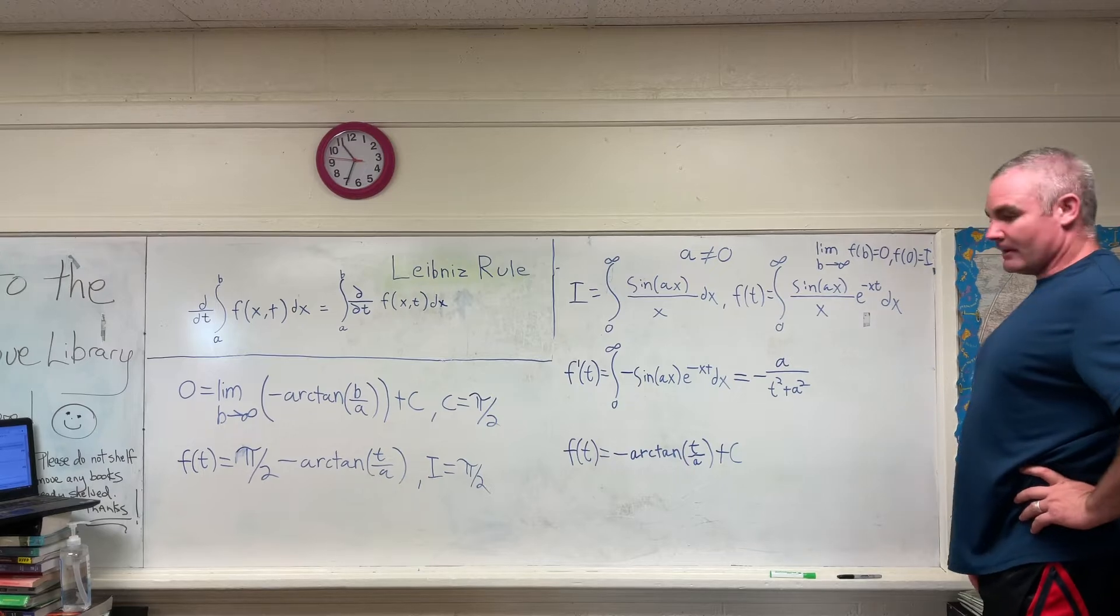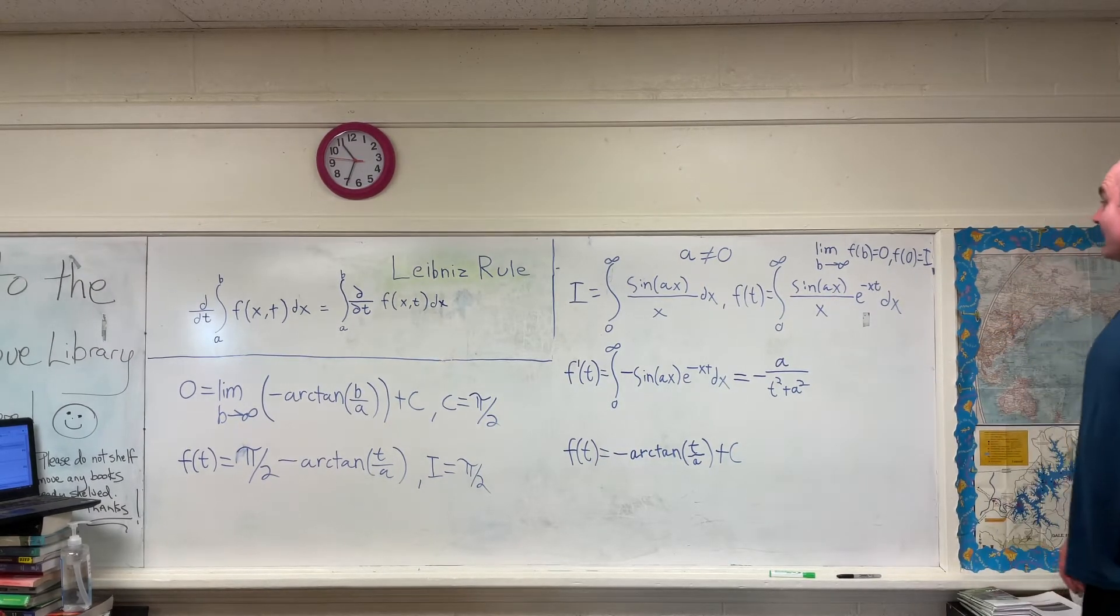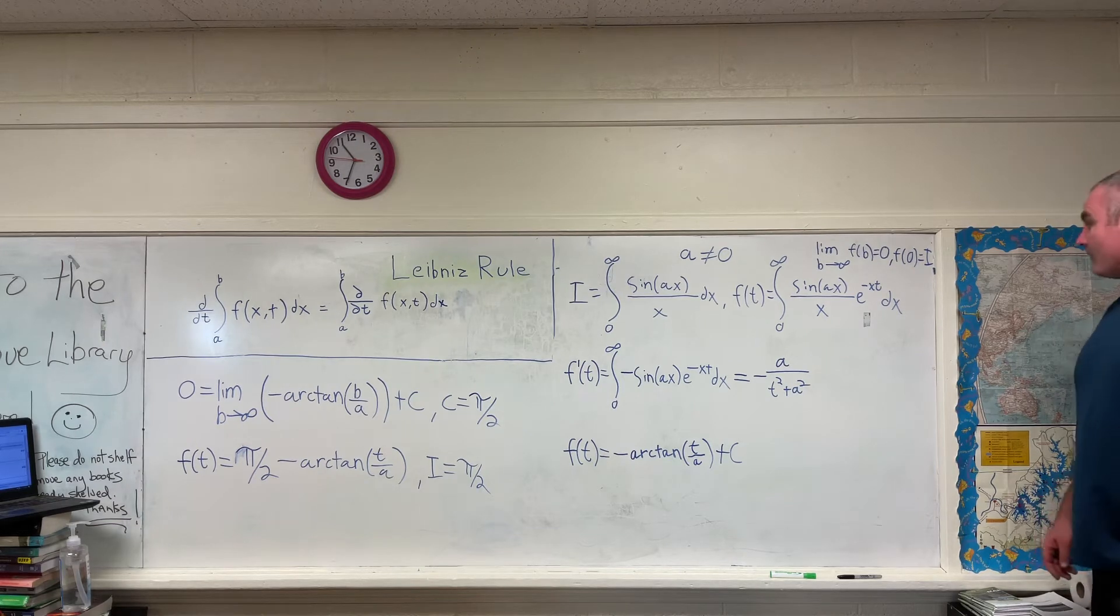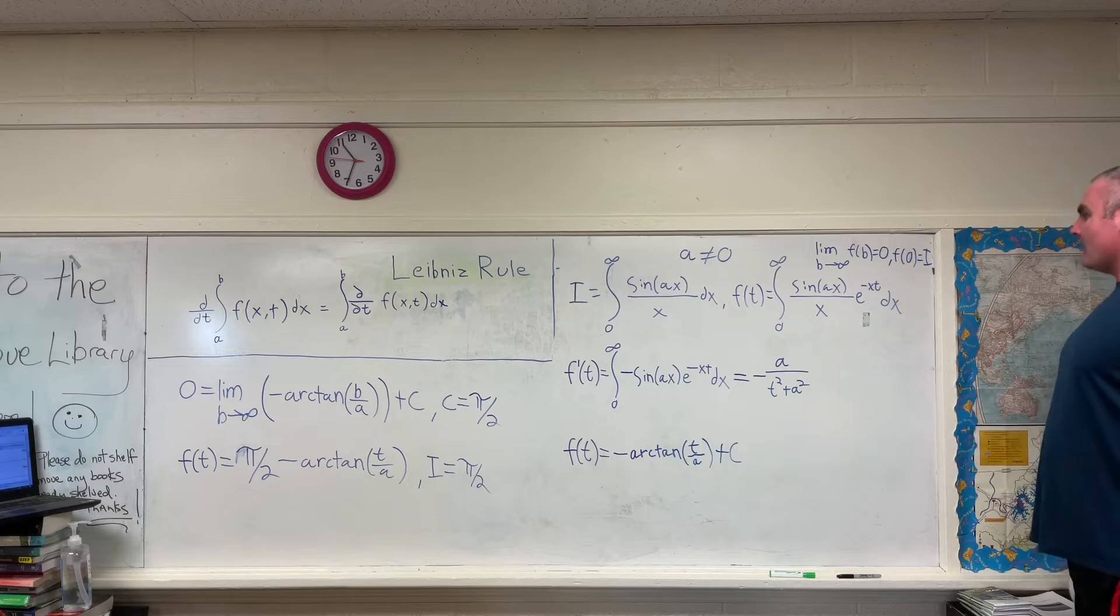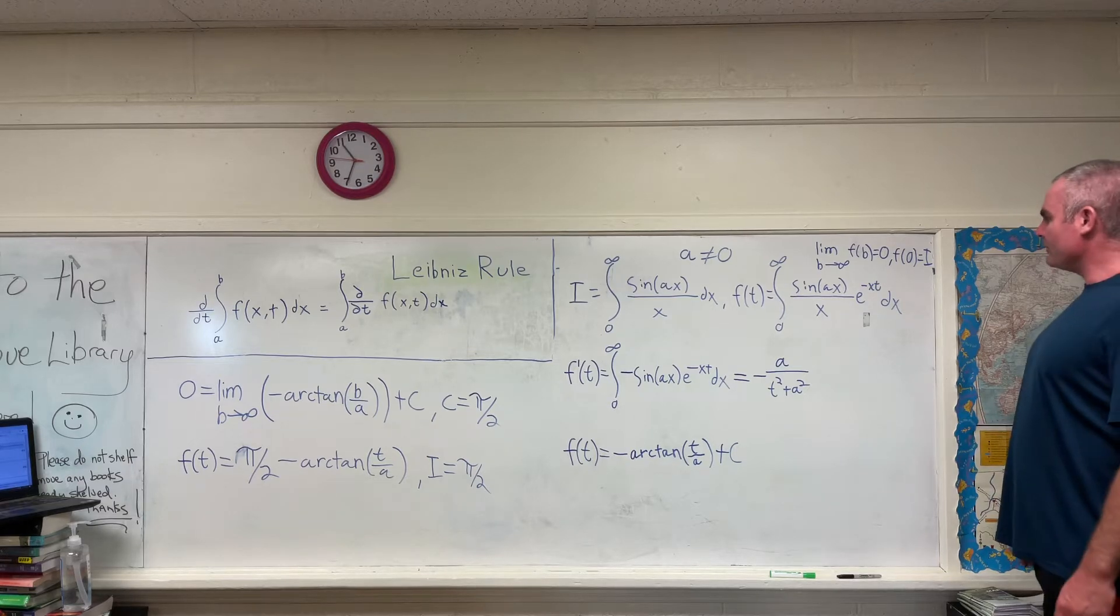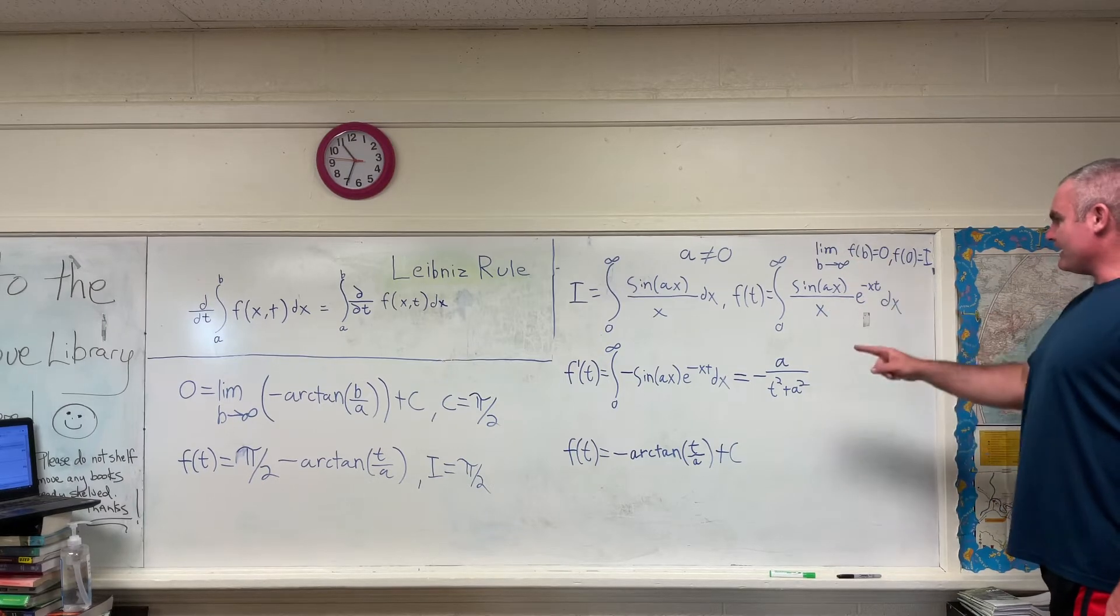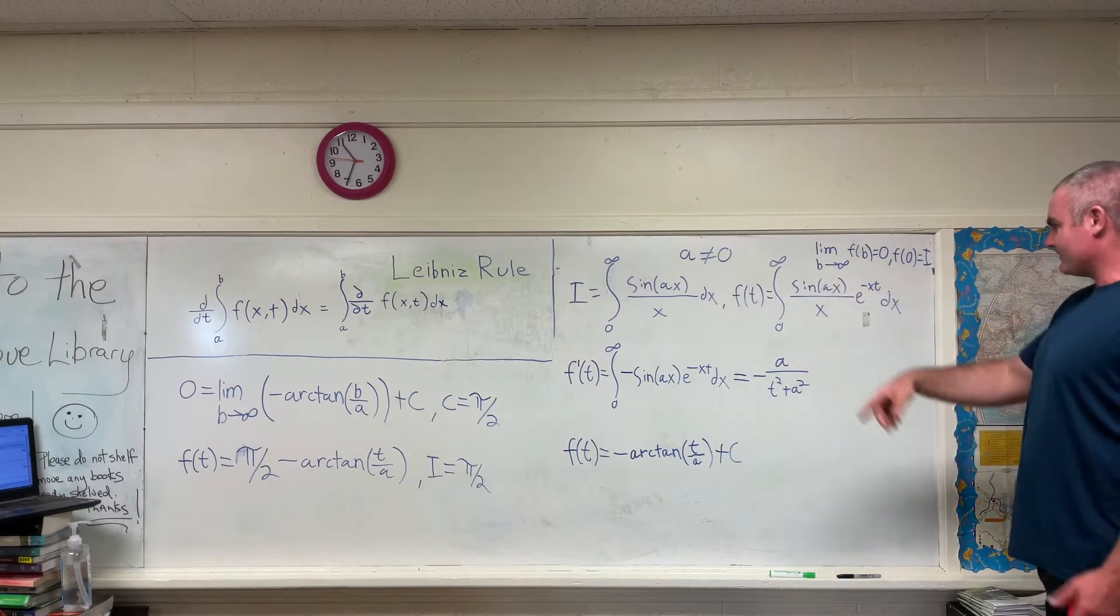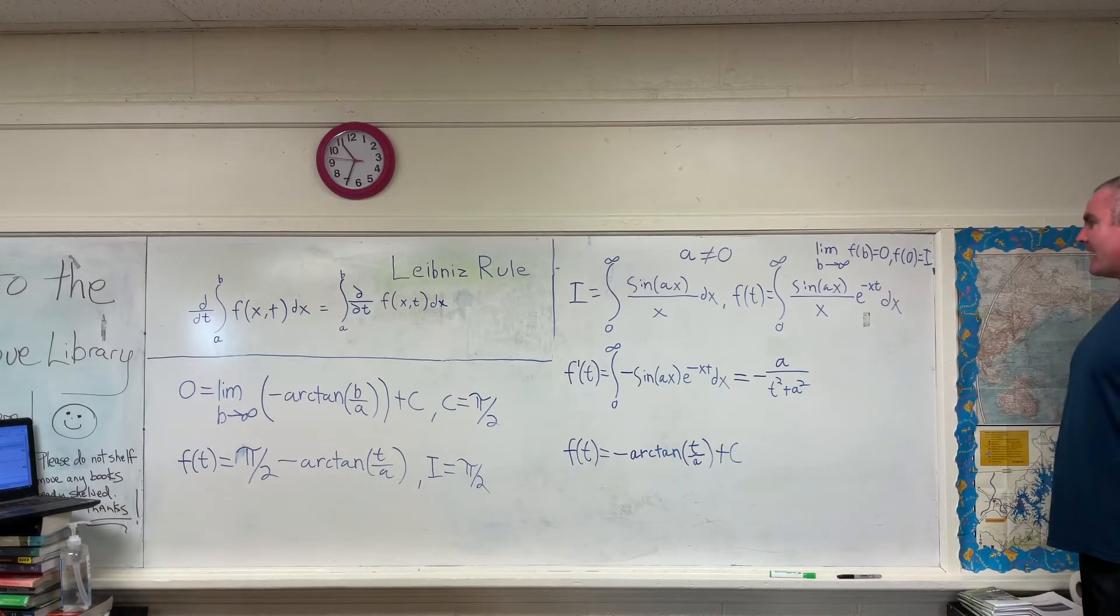So anyway, as per usual we're going to create a function in terms of t, and this time it's going to be a little bit different than normal. What we'll do is create our function of t to be zero to infinity of sine ax over x, same as our original integral, and then we're going to multiply by e to the negative xt.